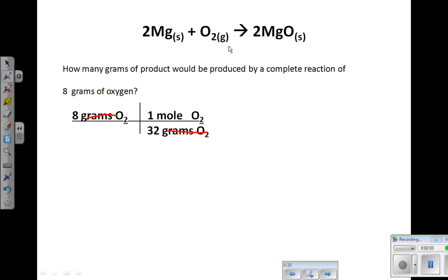We can use our balanced equation to plug in our mole-to-mole conversion. We're going to bring down moles of oxygen and convert it to moles of magnesium oxide. And if we look at our balanced equation, one mole of oxygen gives us two moles of magnesium oxide. It is a one-to-two ratio. So that will be the next conversion factor in our dimensional analysis.